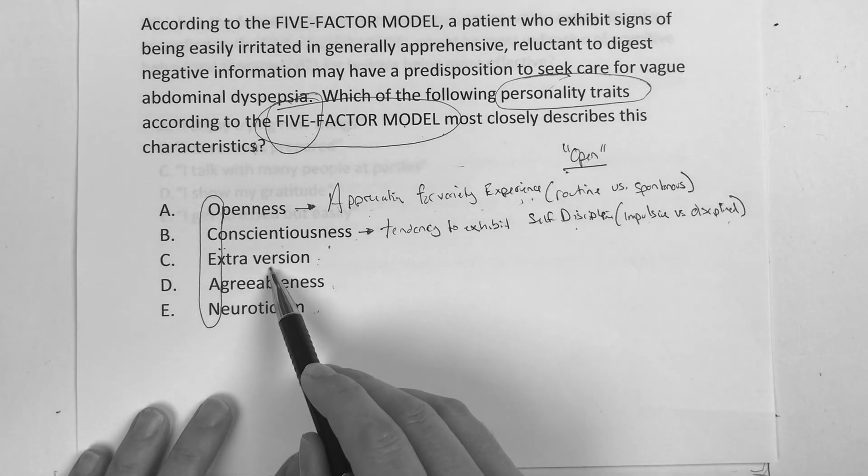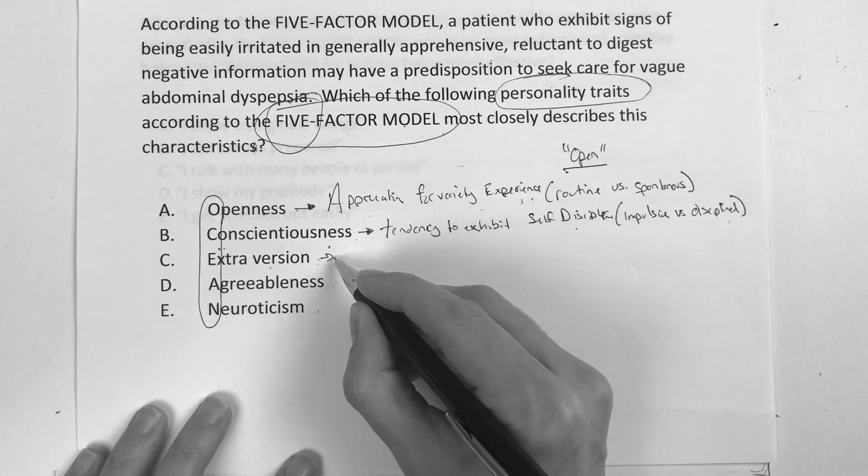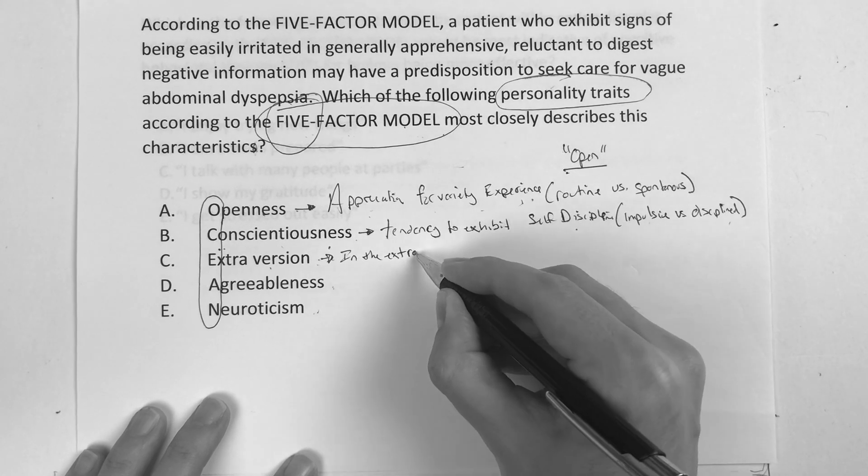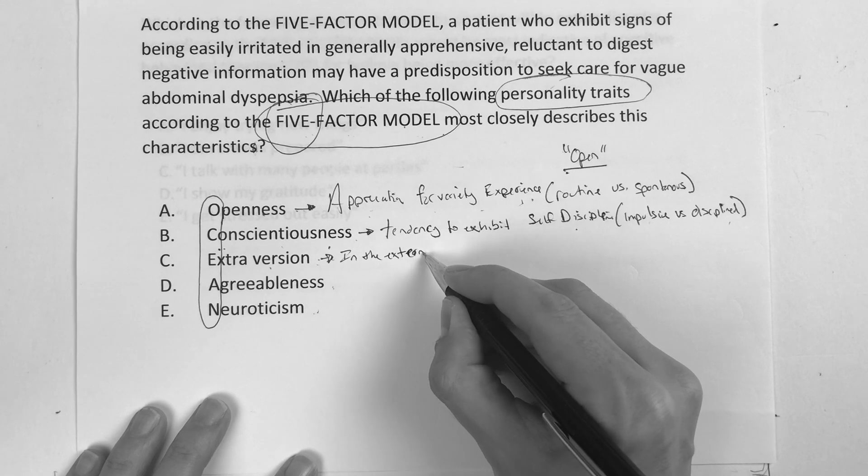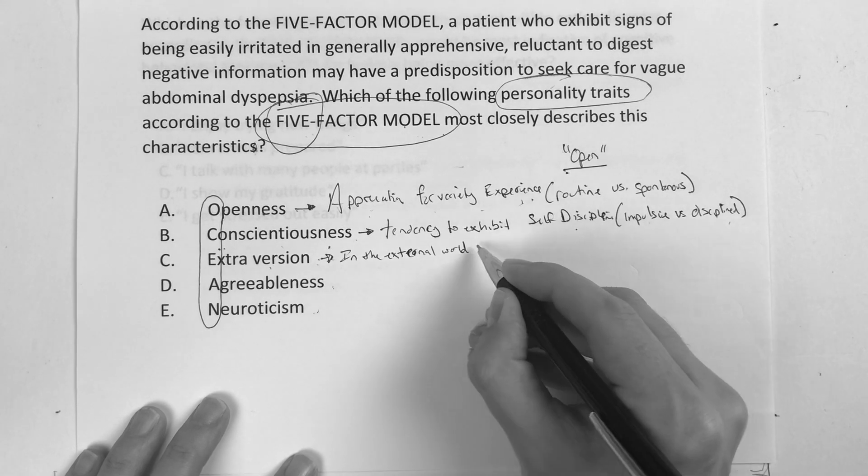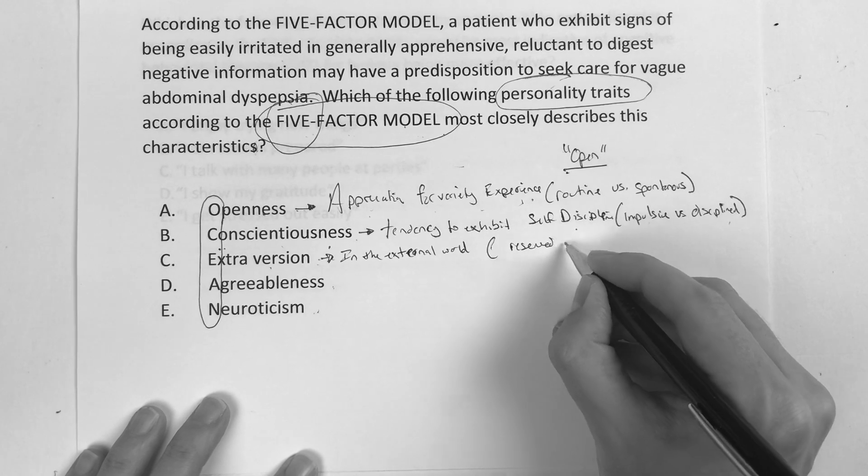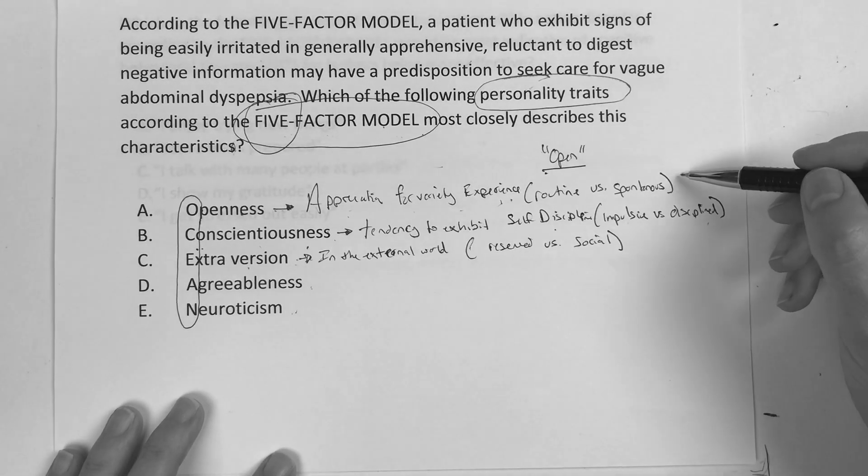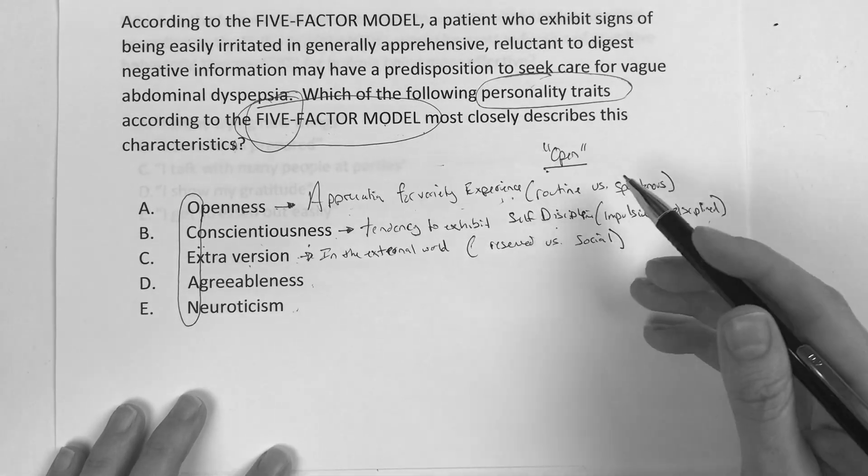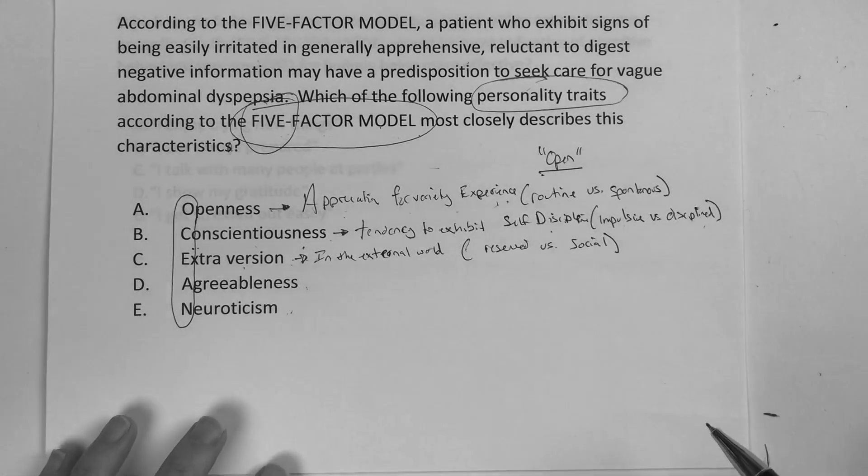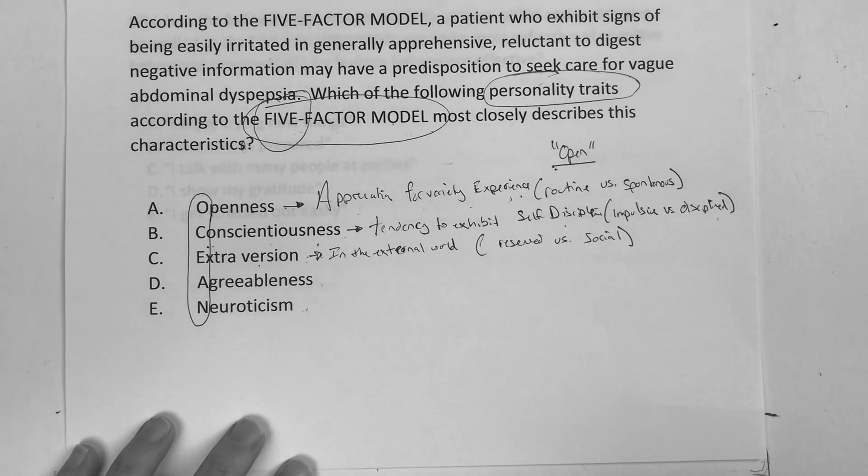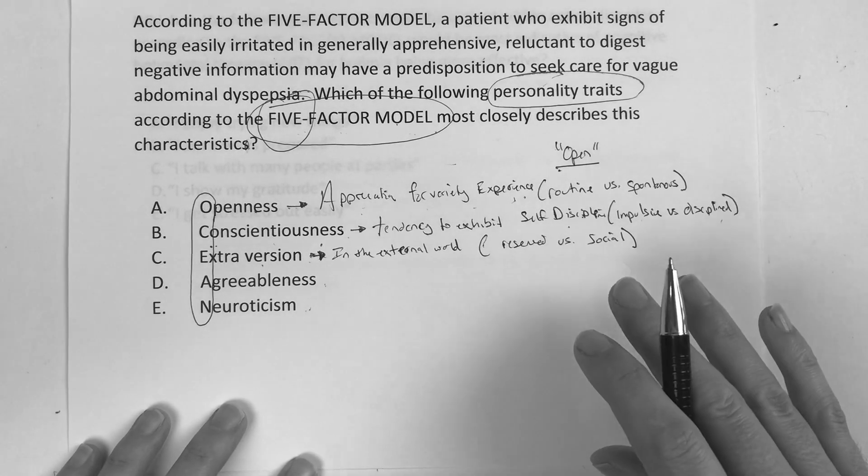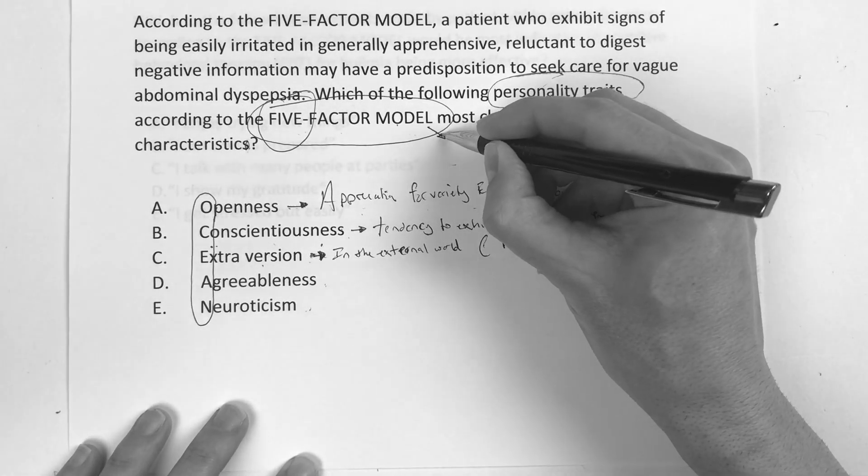The next one is extroversion. And basically that's engagement in the external world. Extrovert, introvert, external world. And so are you reserved versus are you social? And I'm going to in a second here get an example of what the research actually said for each one of these. And if we know those examples, I think that's where they're going to go with it if this is a test question for the step exams. They have to ask questions on communication and the social, and this is researched, evidence-based.